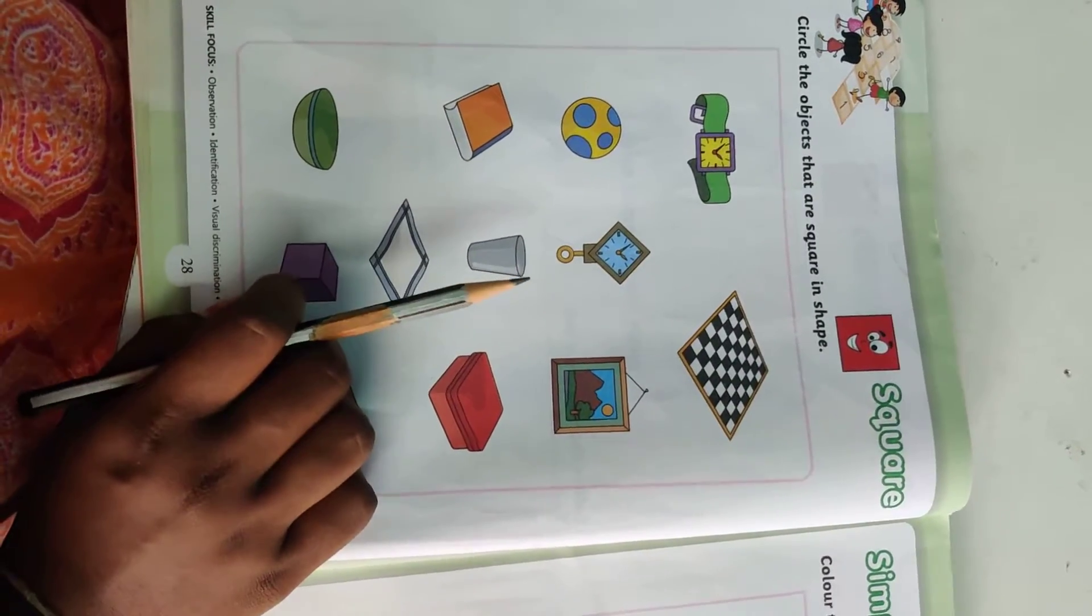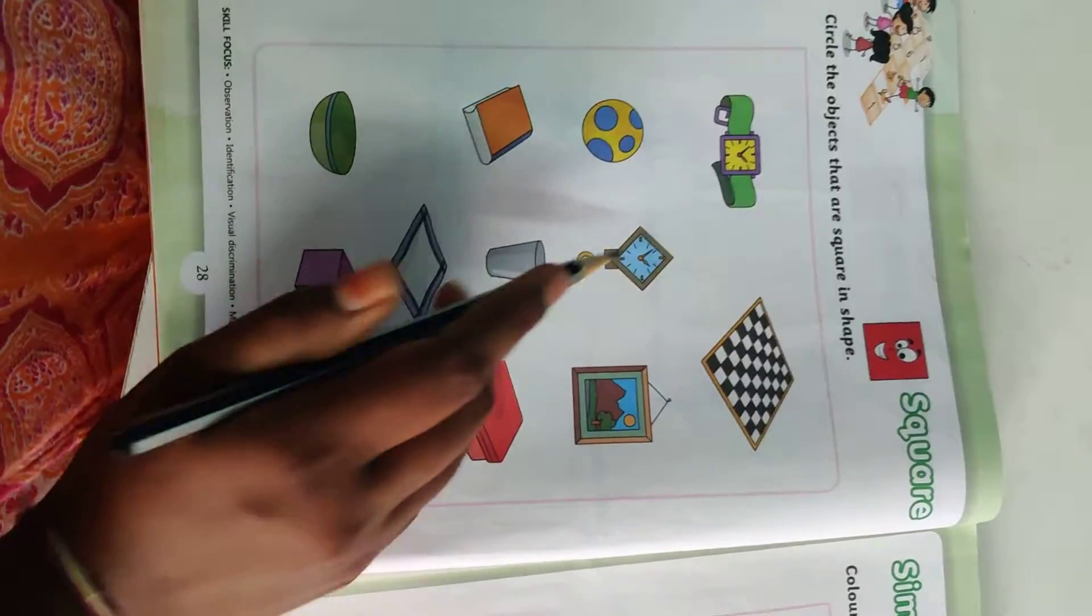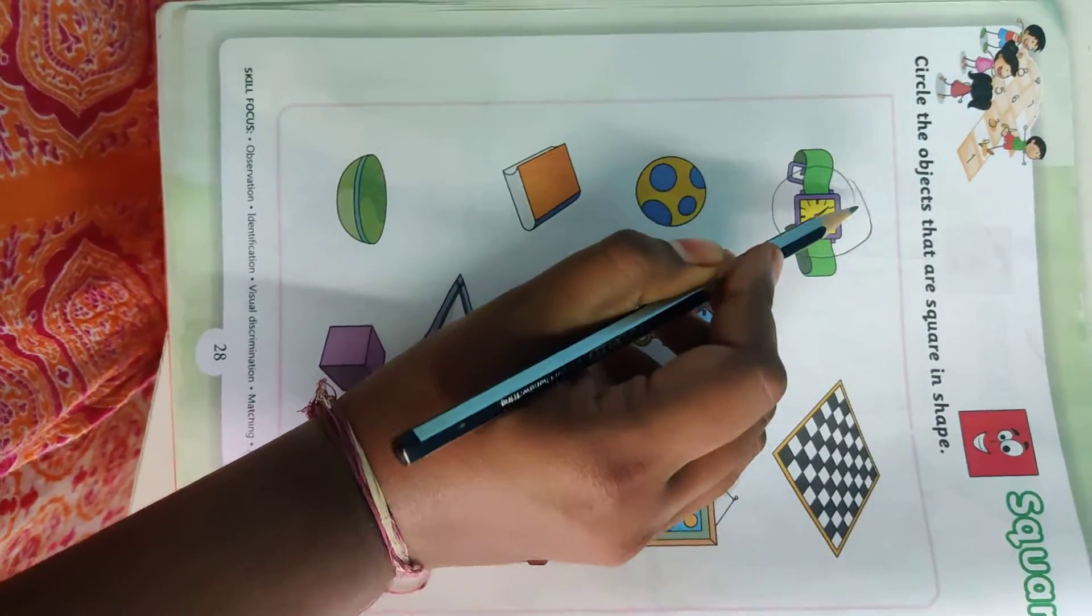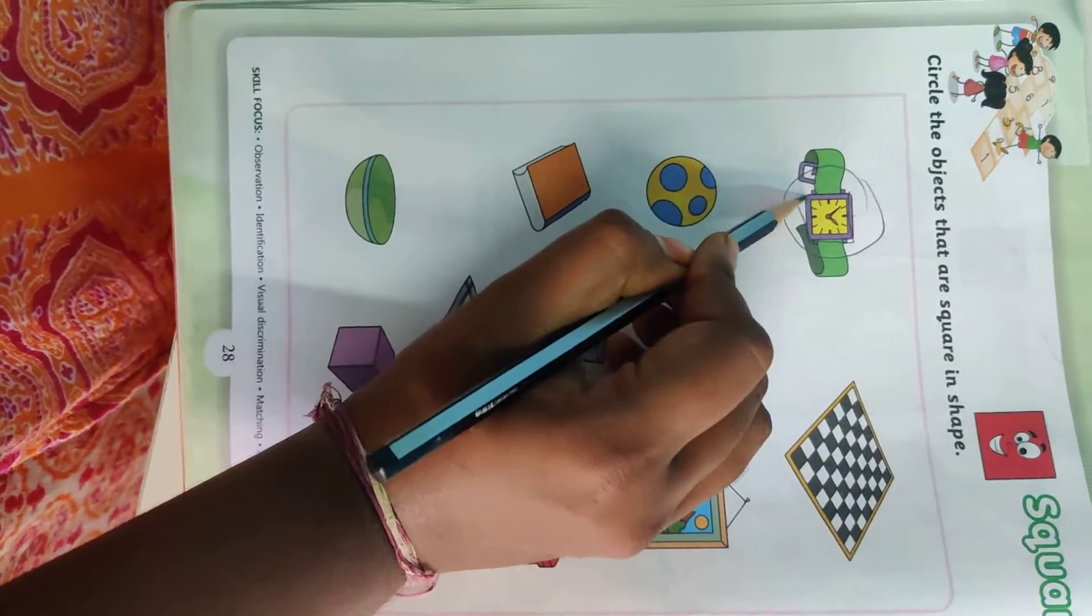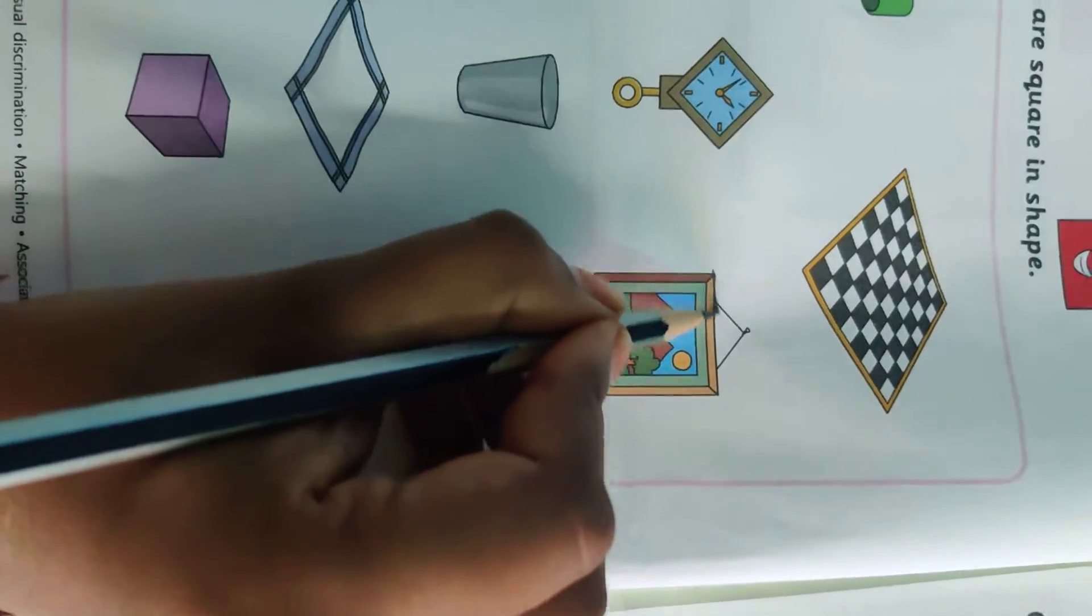Can you see different objects here? Yes. Now, shall we see which is like square? Can you see? This is square. Because four sides are equal. Telling naa? Nalu side, yengge equala arukko, adala square.